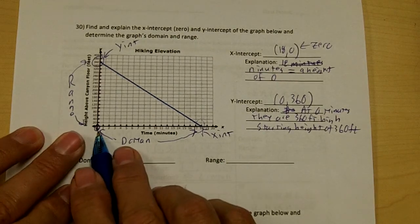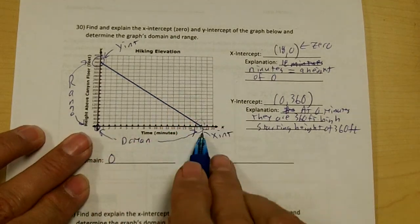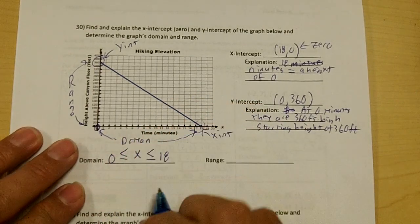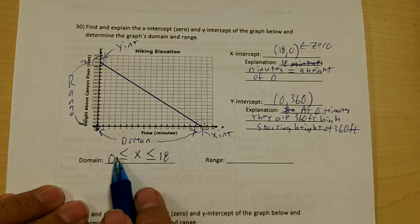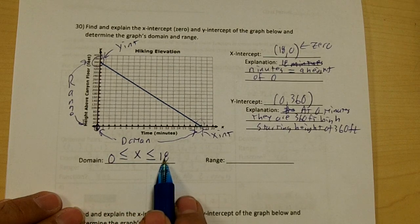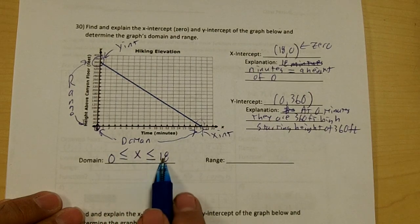Your domain starts at zero and it goes to 18 and the way you write that is using inequalities. So this means my x is more than zero but my x is less than 18. So my x is any number between zero and 18.